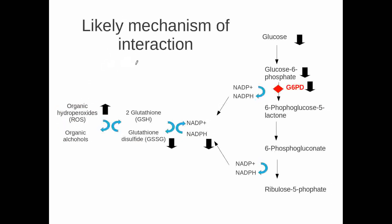In the case of individuals taking glibenclamide, they have increased insulin, so they have decreased glucose in the blood. Therefore, they also have decreased glucose-6-phosphate. We're now talking about individuals that have variants in glucose-6-phosphate dehydrogenase that result in a loss of function — people who are deficient in their glucose-6-phosphate dehydrogenase activity. So these individuals have less glucose-6-phosphate because they're taking the drug, and this results in much less NADPH.